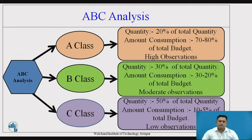A Class materials: the overall quantity of the material in the total quantity is only 20%, and the amount consumed by that 20% quantity is almost 70% to 80% of the total budget. As it consumes 70% to 80% of the total amount, there is a need of high observation. So A Class materials are under high observation.